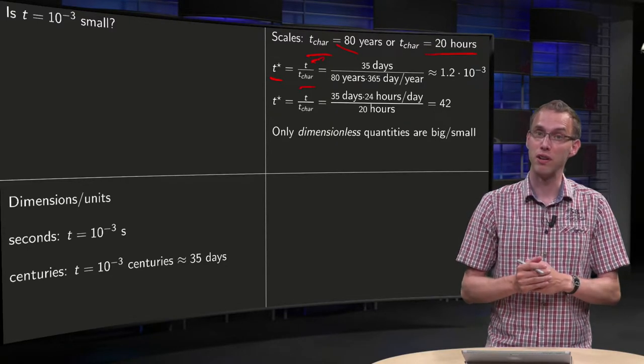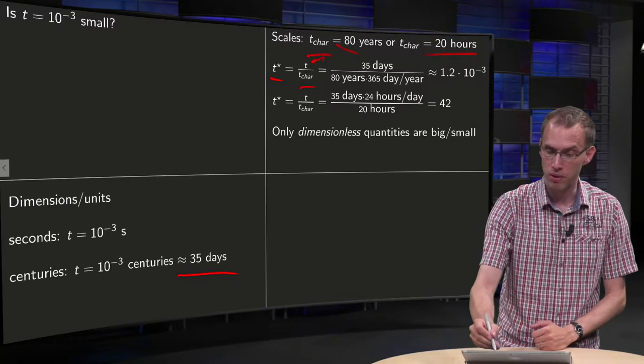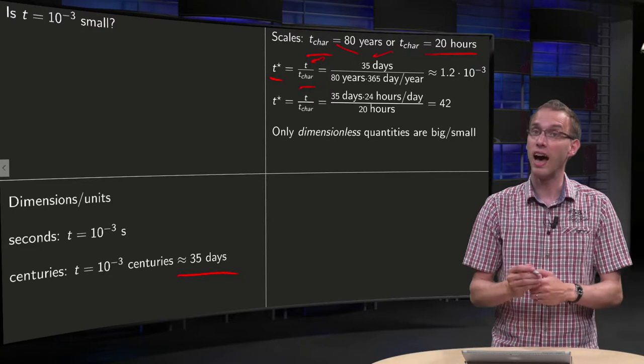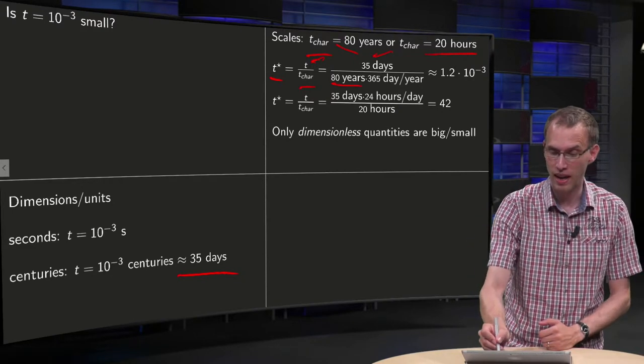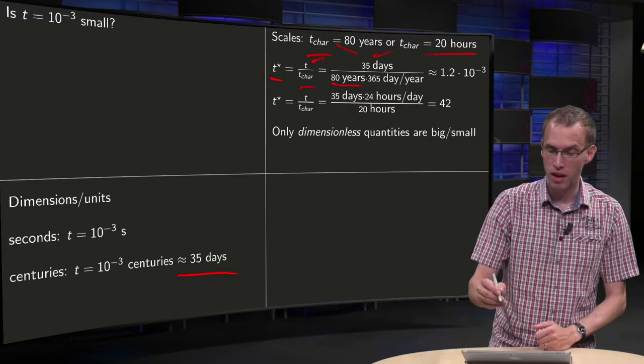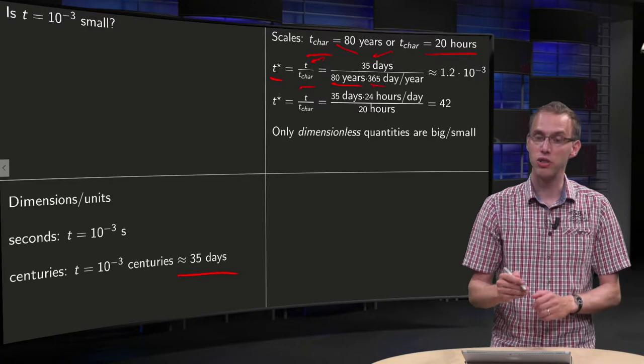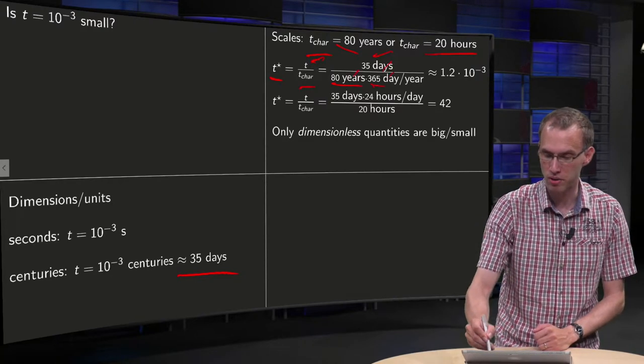So for example, in the example of the 35 days, is that a small or large time? Well you then have your 35 days, and you divide it by the 80 years, and you convert to proper units, because you have 365 days per year, so you see now all units cancel out,